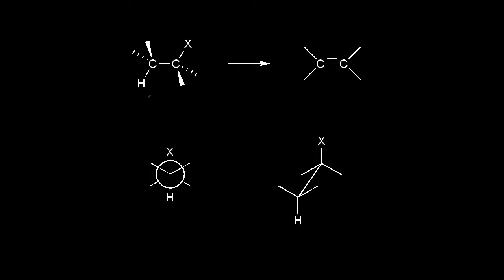The E2 reaction has a concerted mechanism. The carbon bonded to our halogen is our alpha carbon, and the carbon bonded to that carbon is a beta carbon. We need a beta proton for our mechanism. The hydrogen and the halogen have to be on opposite sides of our bond — that's said to be anti — and these four atoms need to be nearly in the same plane: the hydrogen, the carbon, the carbon, and the halogen. So that's planar.